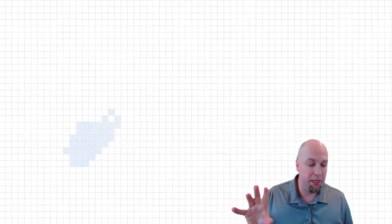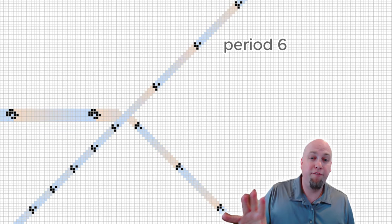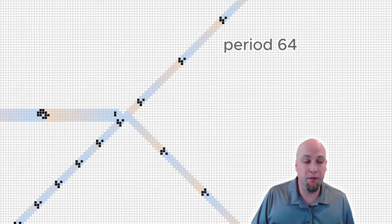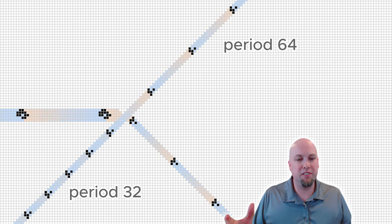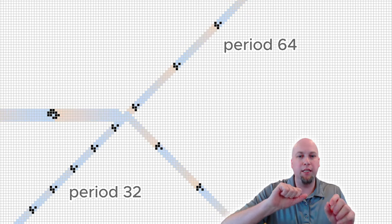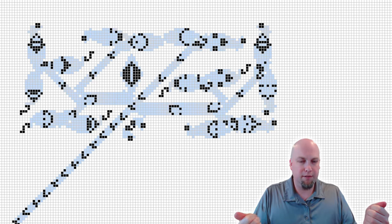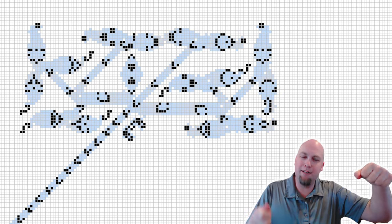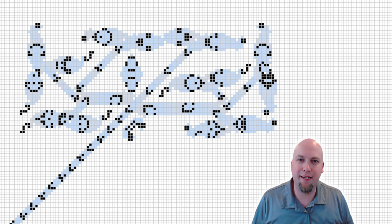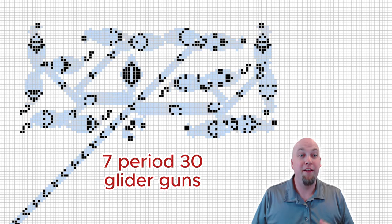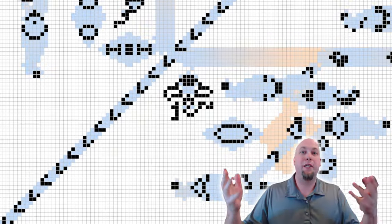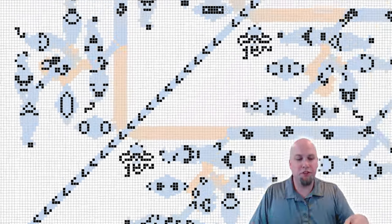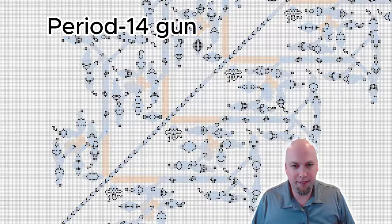So the quest then became, construct a period 14 glider gun. Can we do it? And, yeah, it turns out that we can. There are mechanisms for sort of merging different glider streams together. So, for example, once we know how to construct a period 30 glider gun, we can just sort of cleverly arrange them and merge their streams together so as to create a period 15 glider gun. And similarly, if you have period 28 glider guns, you can merge their streams together to get period 14 glider guns.